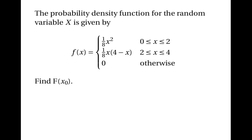Here's another question for Method 2. The probability density function for random variable x is: an eighth of x squared when x is between 0 and 2; an eighth of x times (4 minus x) when x is between 2 and 4; and 0 otherwise. This time we have a non-linear function — it's not made up of straight lines because we have x squared involved.